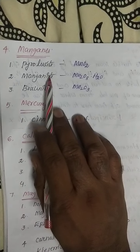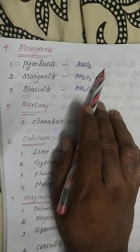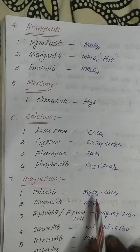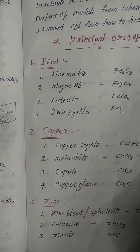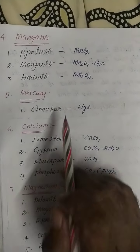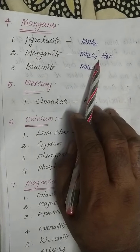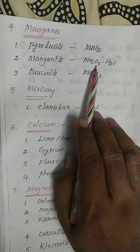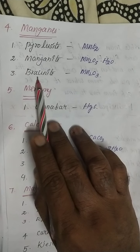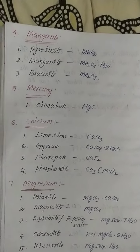Next is manganese. Pyrolusite — important formula MnO₂. And manganite — note that magnetite is the iron mineral, but manganite is the manganese mineral. Manganite formula is Mn₂O₃·H₂O, and braunite is Mn₂O₃. These three are the minerals of manganese.